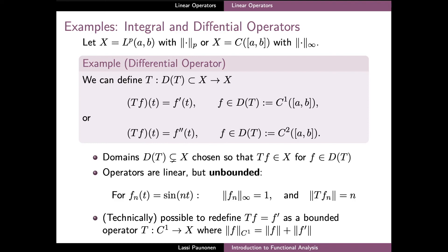One particularly important feature of differential operators more generally is that they tend to be in fact unbounded operators. The fact that they are not bounded follows from the fact that it's not possible to choose the constant M in the definition of boundedness. We can show this by considering especially highly oscillatory functions such as sines or cosines. For these types of functions the size of the derivative is not bounded uniformly with respect to the values of the functions, and this ultimately leads to the conclusion that the norms of Tf on x cannot be bounded by any constant times the norm of f on x.